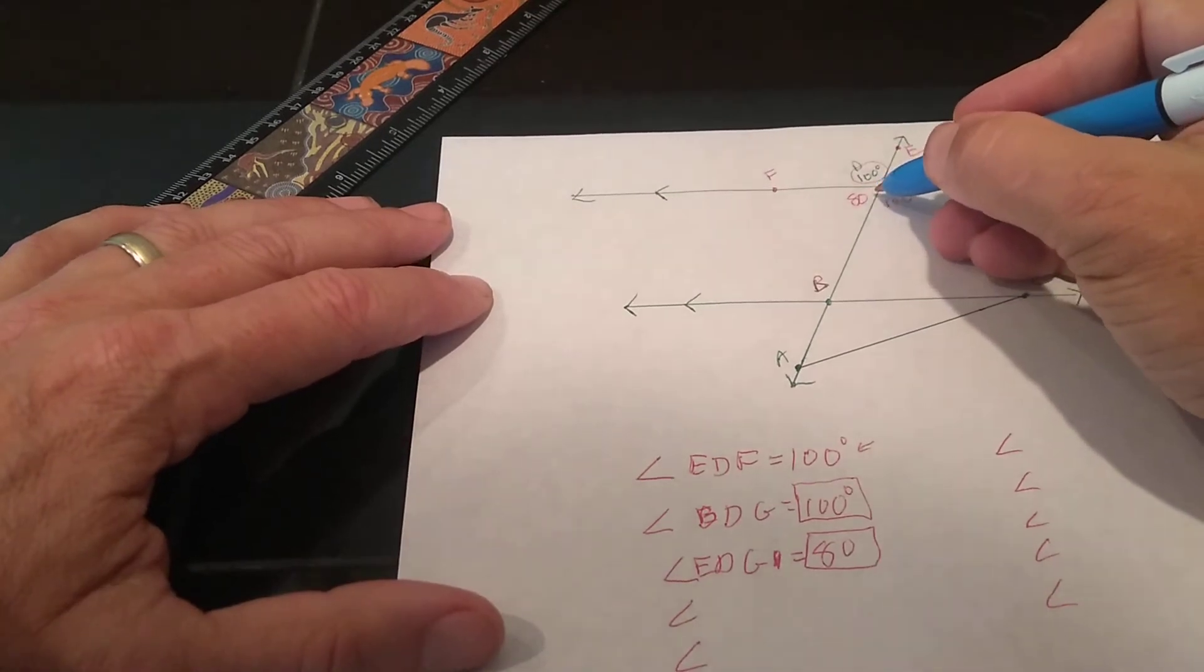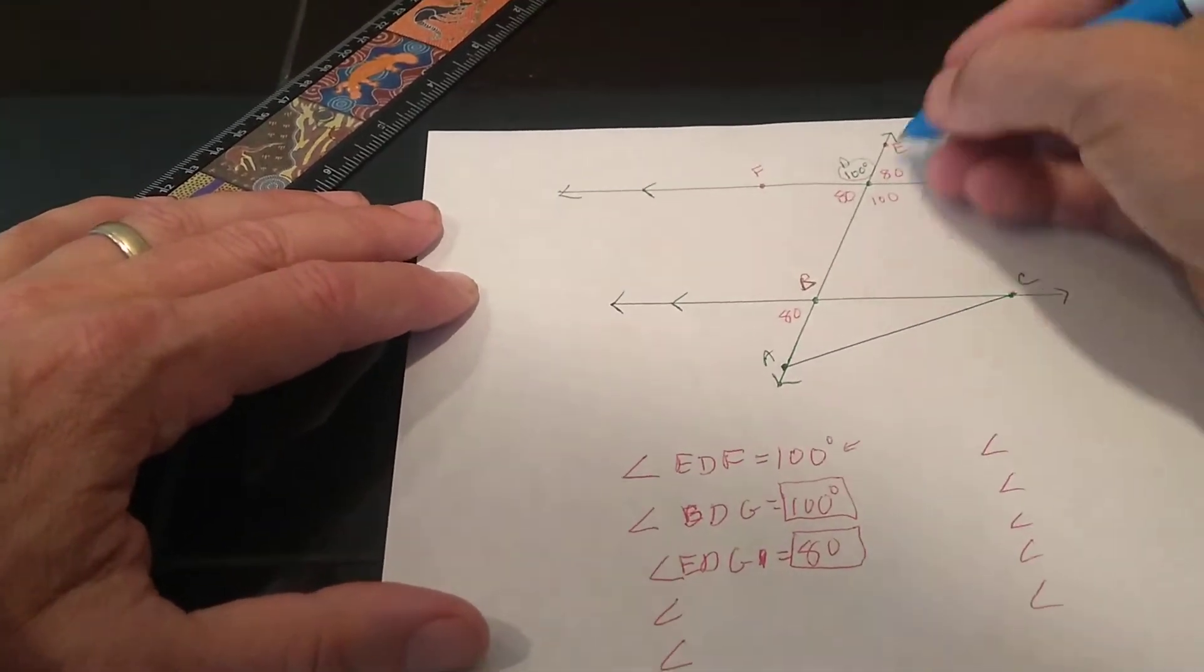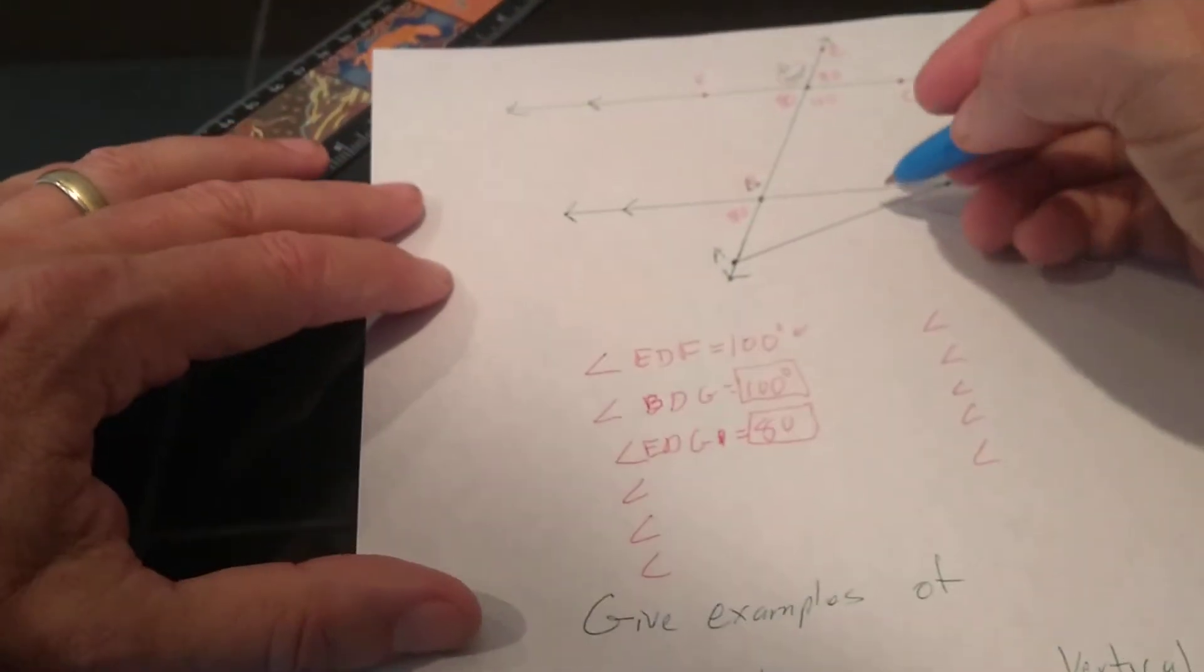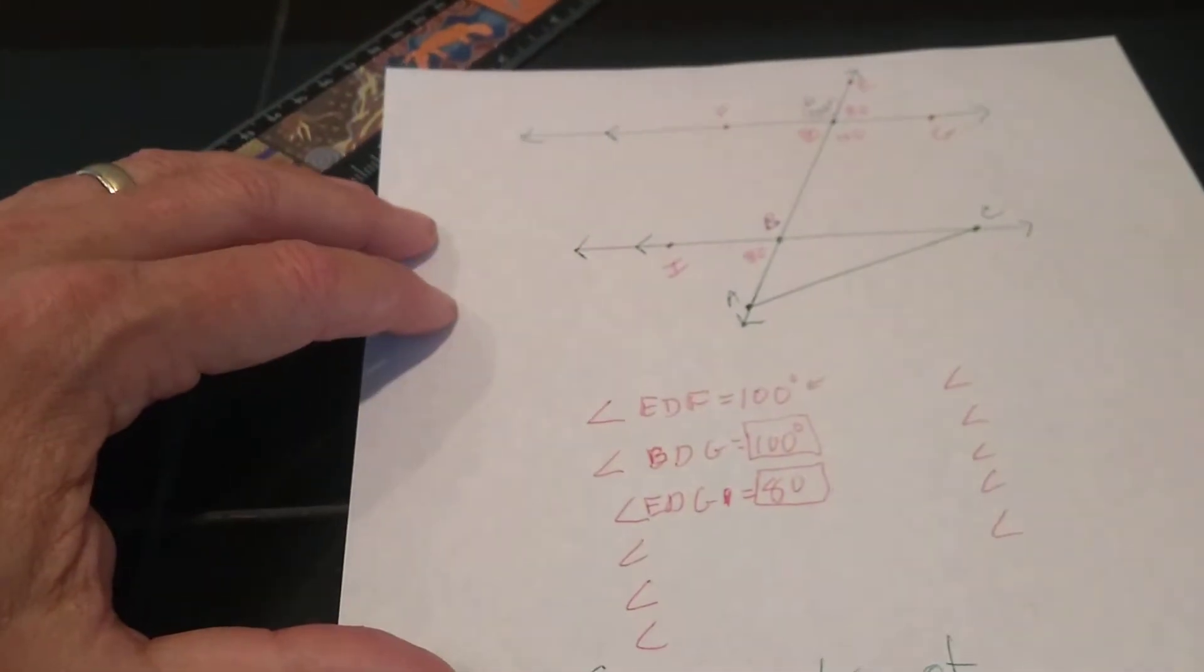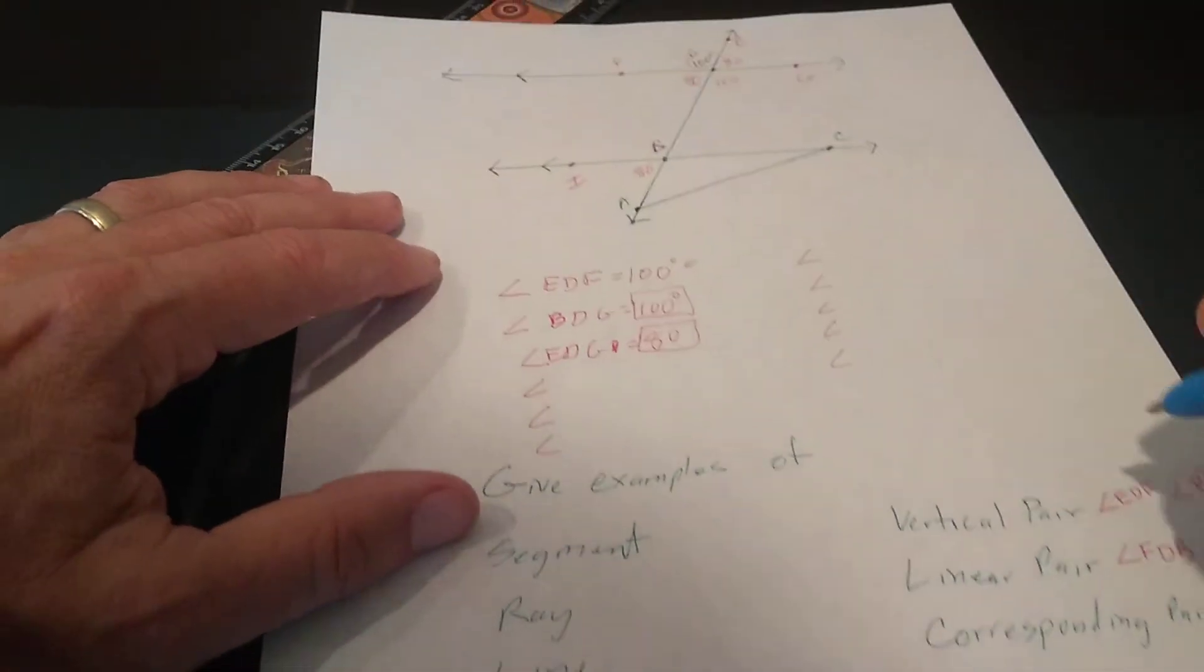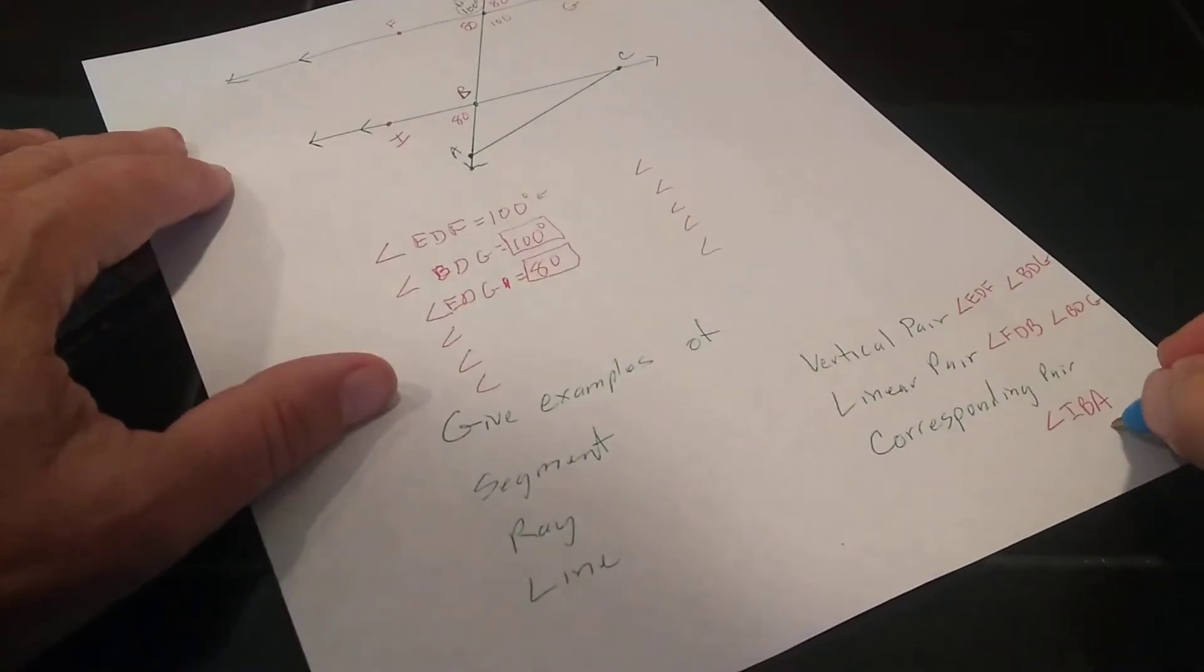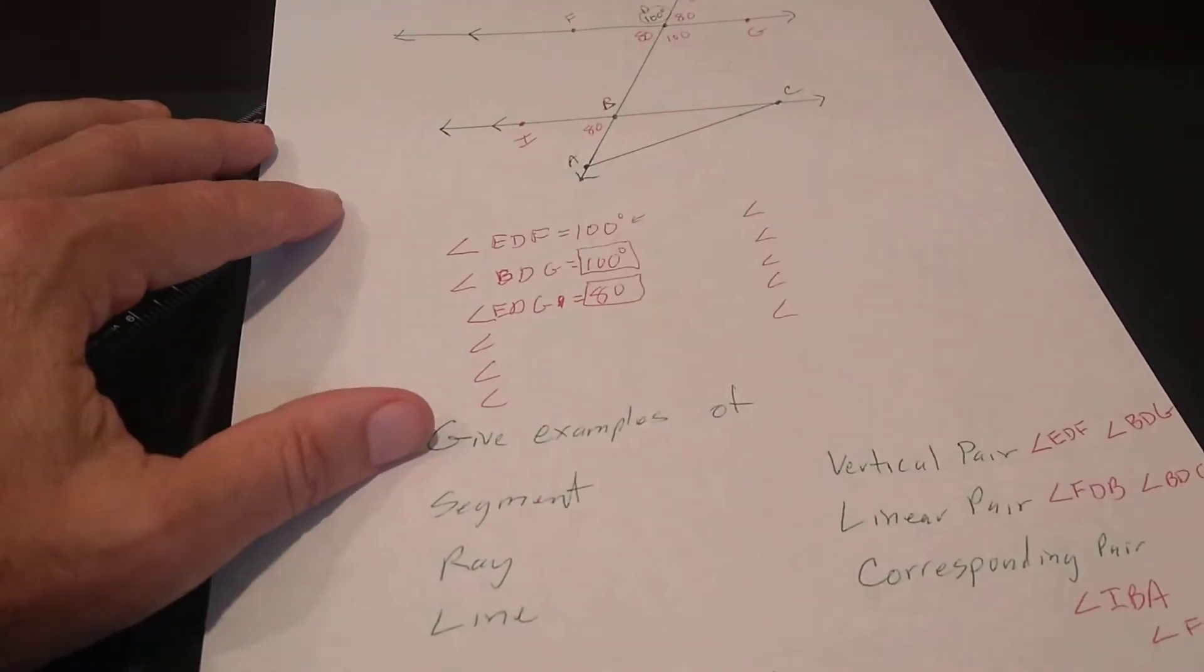Okay. This 80 here, FDB and this 80 down here are corresponding angles. I got parallel lines. I got a transversal. They're both lower left. They match up. That's what corresponding means. So I'm going to go ahead and write that last example there. I need another letter. Strangely, I'm going to make this I because I've got an invisible H that I know I'm going to want to add, but you could call it whatever you want to. But I need to name that. So I'm going to call that IBA. So I'm going to call that angle IBA is part of my corresponding pair. IBA matches up to FDB FDB. So there's an example of a corresponding pair.